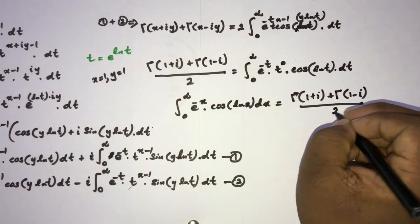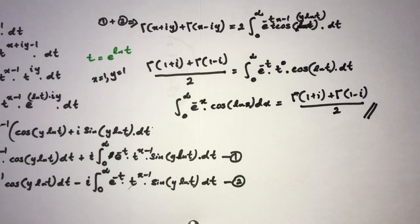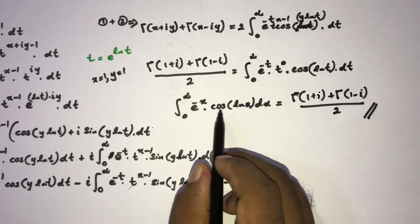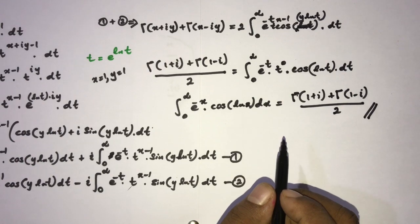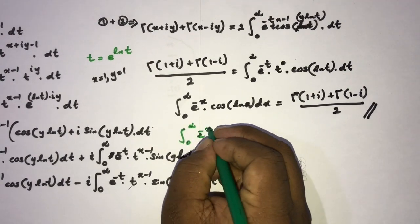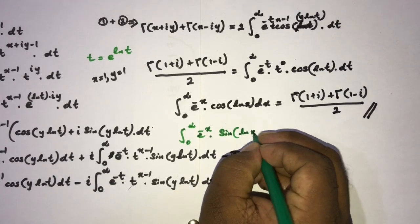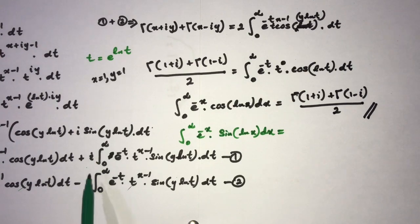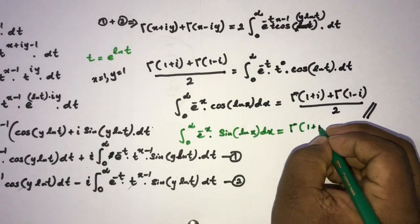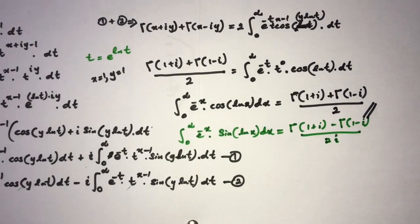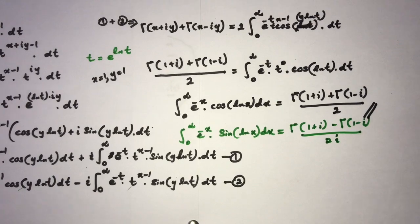This integral equals gamma of 1 plus i plus gamma of 1 minus i, over 2. If we instead subtract equation 2 from equation 1, we can also evaluate the integral from zero to infinity of e to the minus x times sine of natural log of x dx, which equals gamma of 1 plus i minus gamma of 1 minus i, over 2i. If you like this video please subscribe to this channel. Thank you for watching.